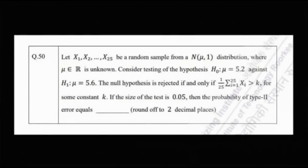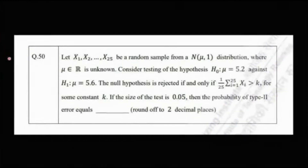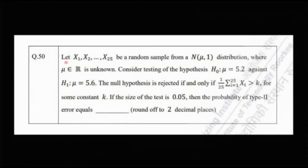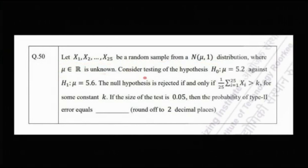Welcome to Chintha Statistics and Data Science. Today we are going to solve problem number 50 from IITG MMS 2022. The problem says: let x1 through x25 be a random sample from a normal(mu, 1) distribution where mu is an unknown real number. We are considering the test of hypothesis H0: mu = 5.2 against H1: mu = 5.6.